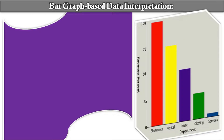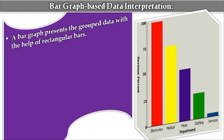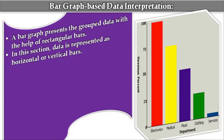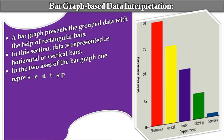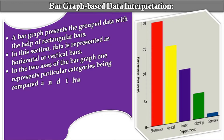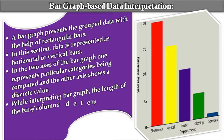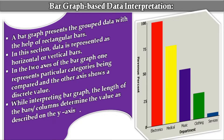The second type is bar graph based data interpretation. A bar graph presents grouped data with the help of rectangular bars. Data is represented as horizontal or vertical bars on two axes — one axis represents the particular categories being compared, and the other shows the discrete values. While interpreting the bar graph, the length of the bars or columns determines the value, as described on the Y axis.